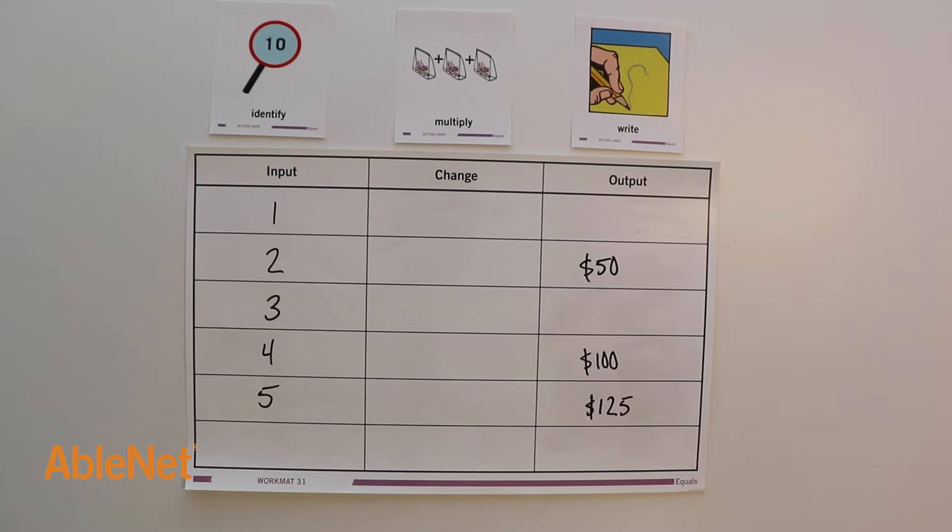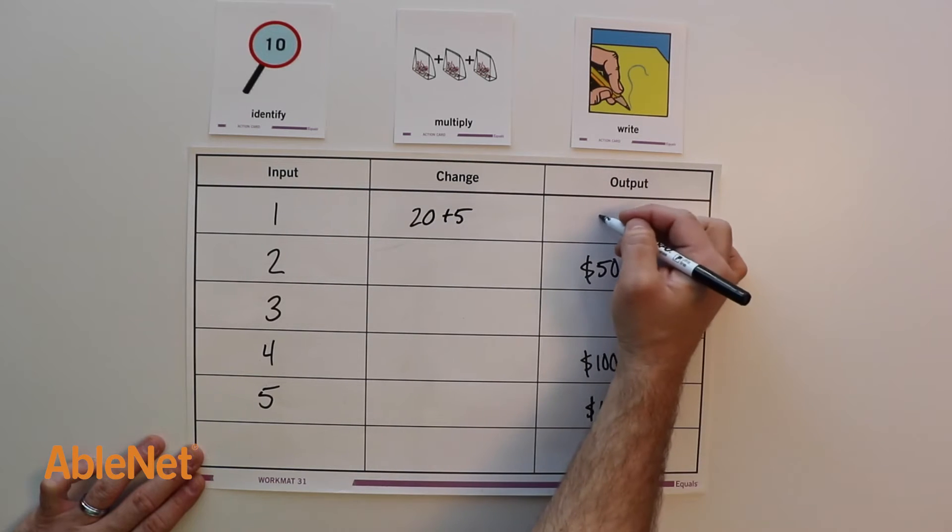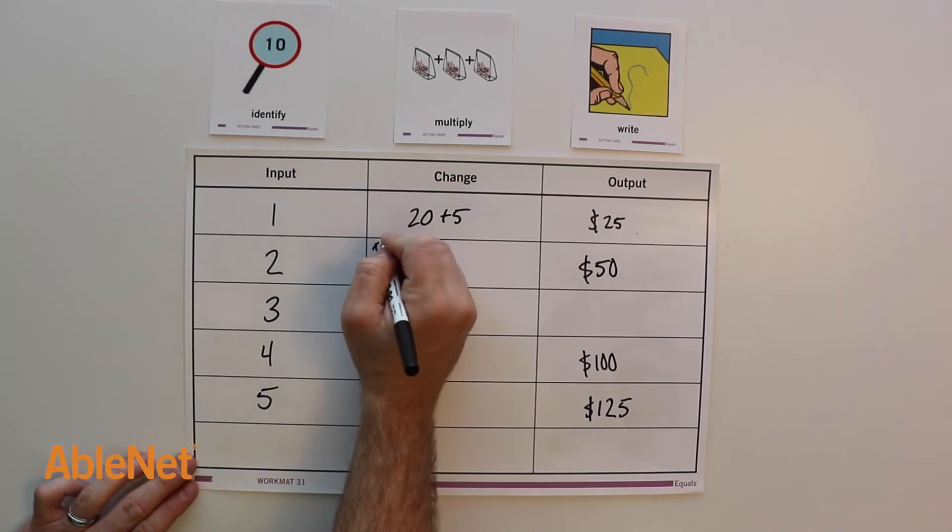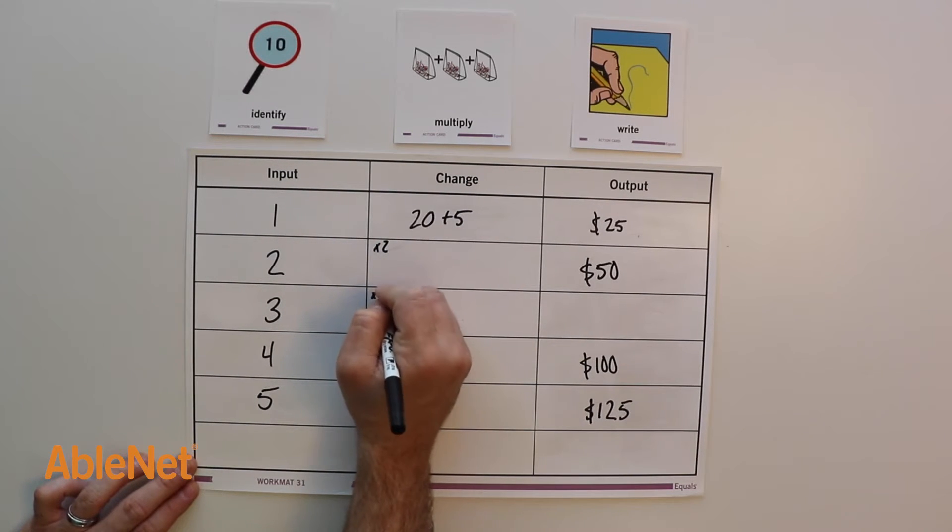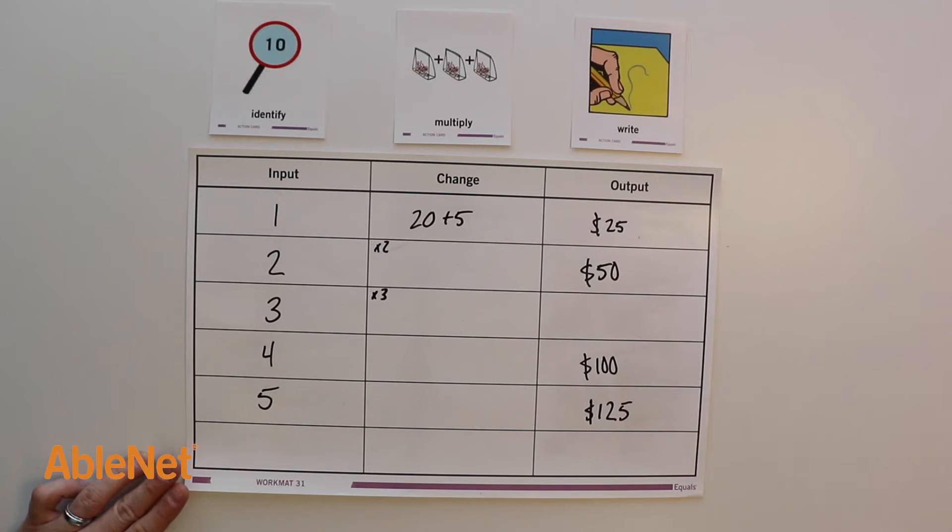I will write 25 in expanded form in the first row, times 2 in the second row, and times 3 in the third row. Now I can multiply the expanded form of 25 by 3.